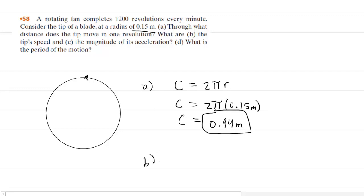In part B, we are asked for the tip of the fan's speed. And we can symbolize that speed with a letter V. And it turns out that we can find the speed using this information right here. We can rewrite that as 1,200 revolutions over 1 minute.